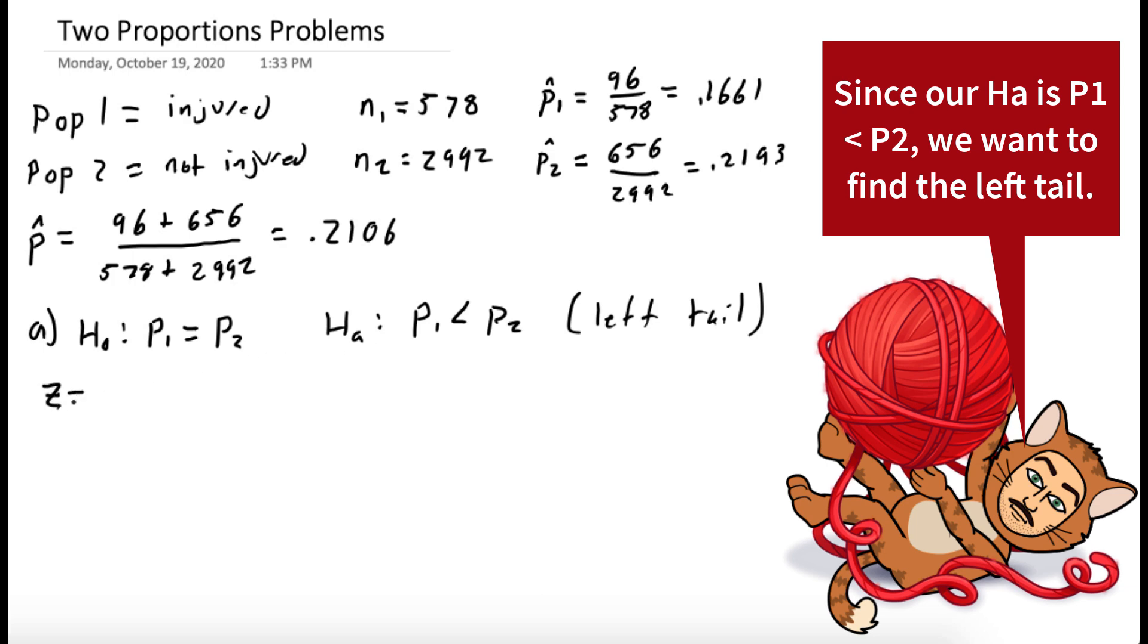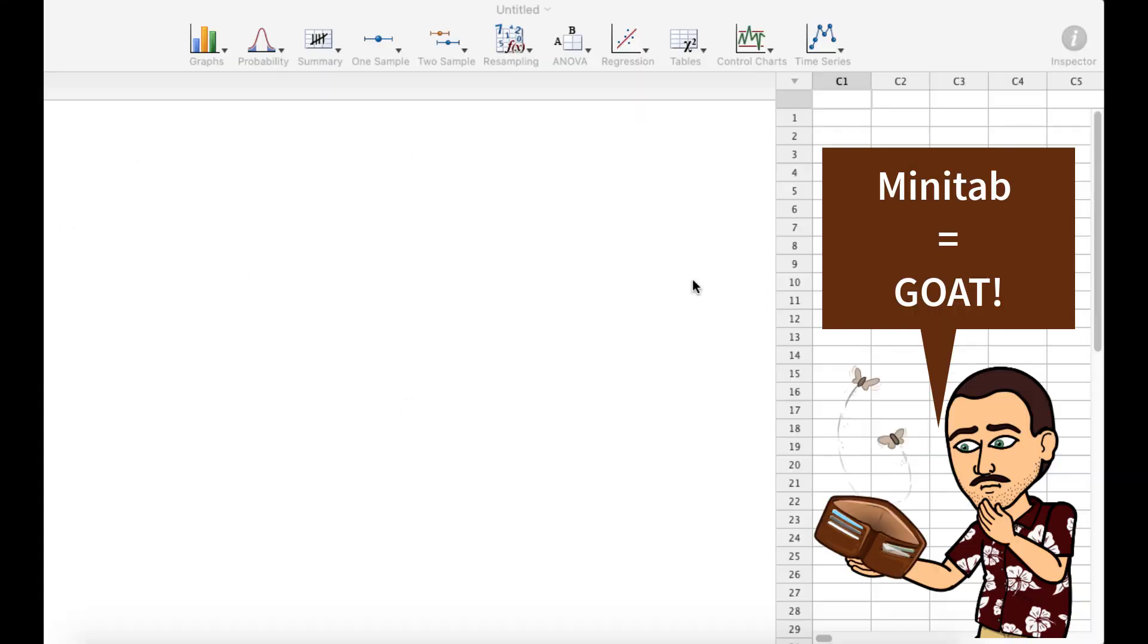We need to compute the Z statistic. Looking back in our notes, we know that Z is P1 hat minus P2 hat over the square root of P hat times 1 minus P hat times 1 over N1 plus 1 over N2. Plugging this into a calculator, we get Z equals negative 2.8717.